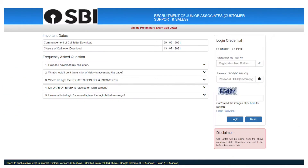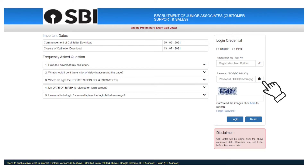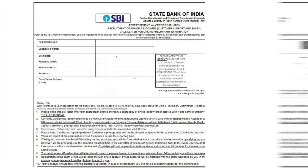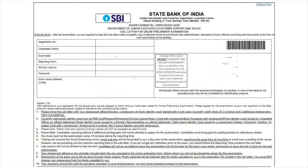A new page will open on the screen. Enter the registration number or roll number and password or date of birth, along with the captcha code, to download the Admit Card of SBI Clerk. After logging in with valid details, the Admit Card will be available on the screen.